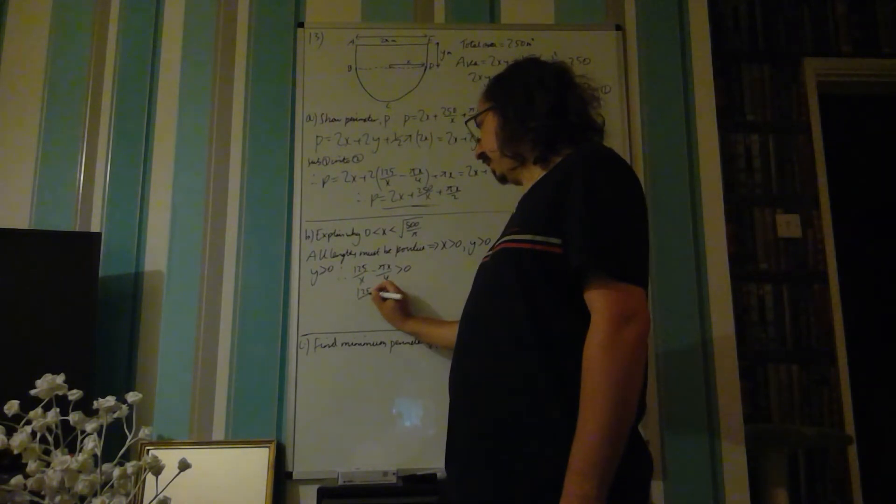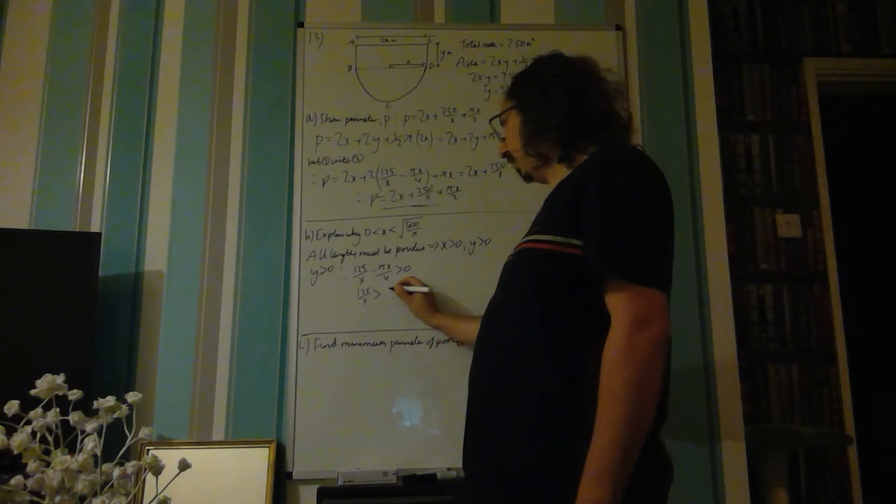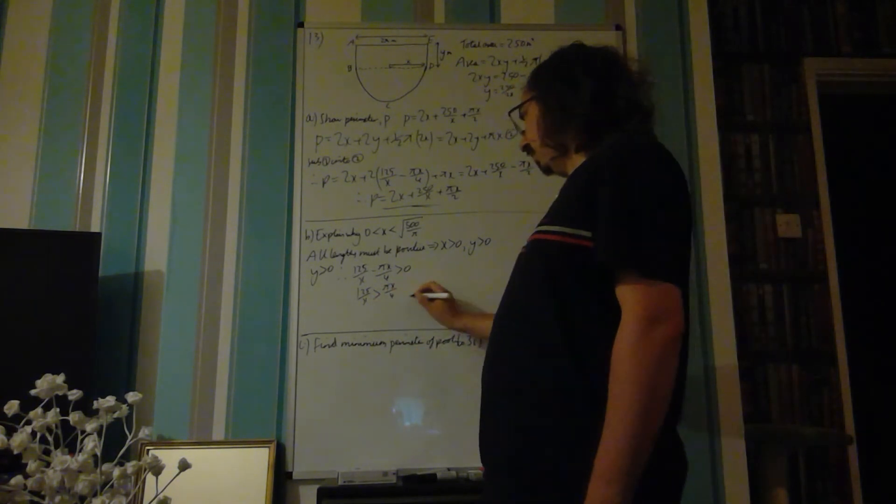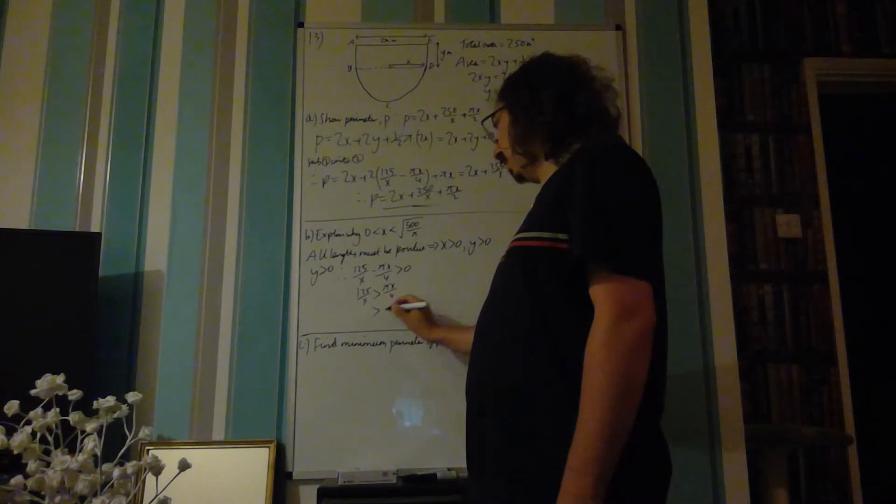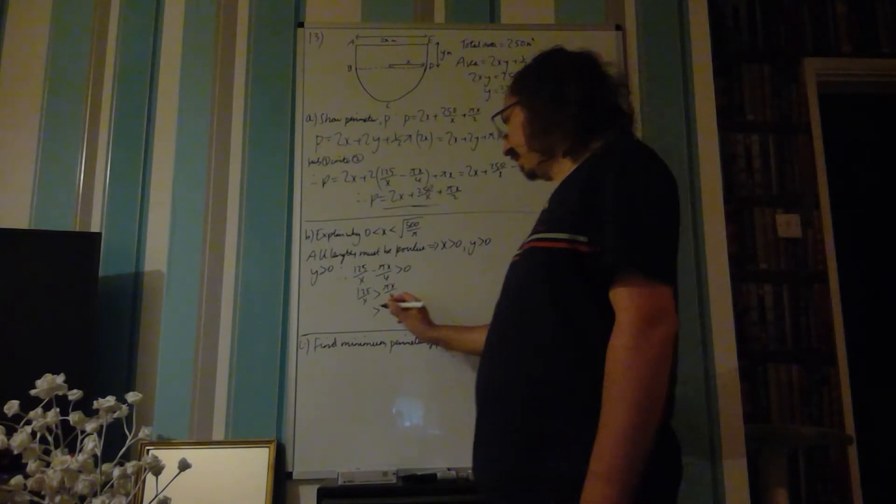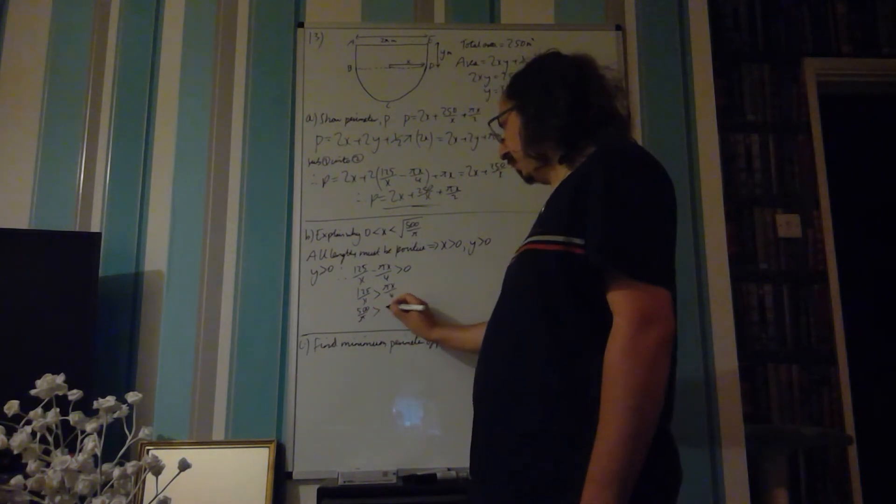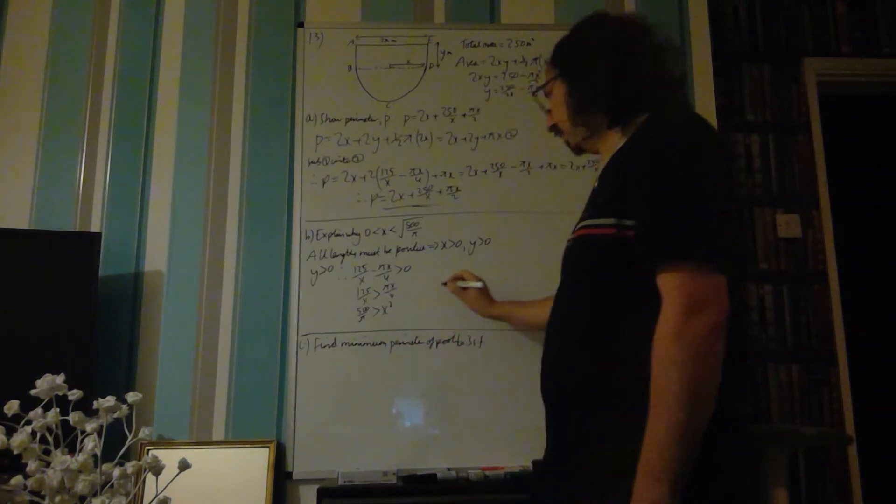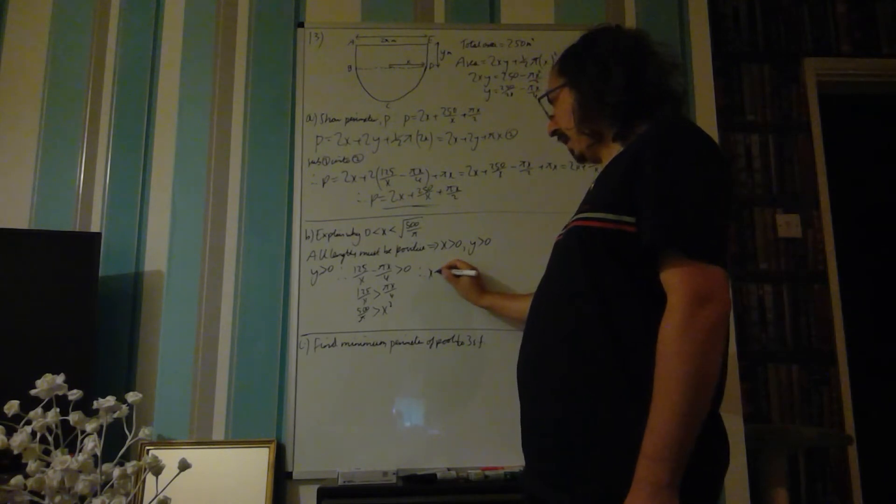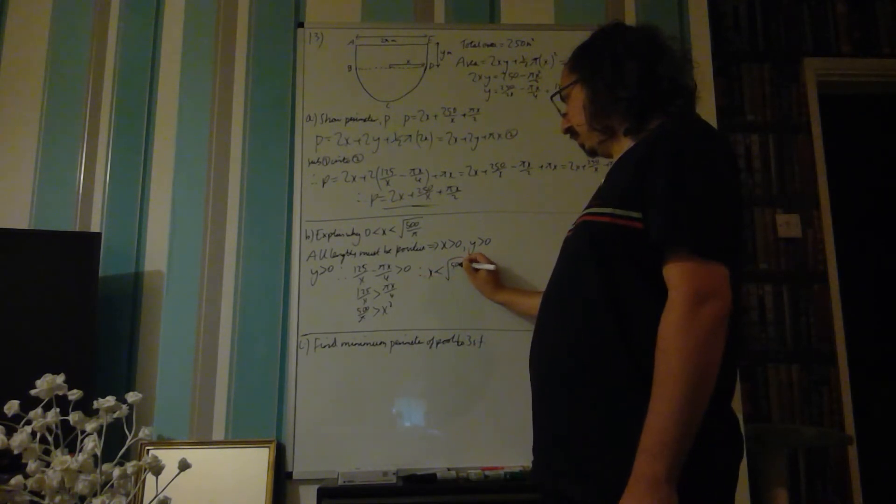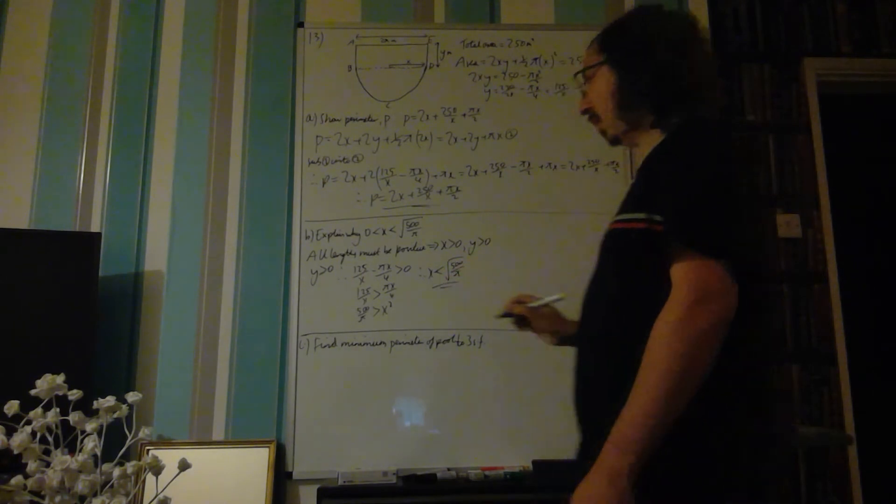that implies 125 over x minus pi x over 4 must be greater than 0. And we can rearrange this. So 125 over x must be greater than pi x over 4. Therefore, 4 times 125 over pi must be greater than x squared. So therefore, x must be less than the square root of 500 over pi.